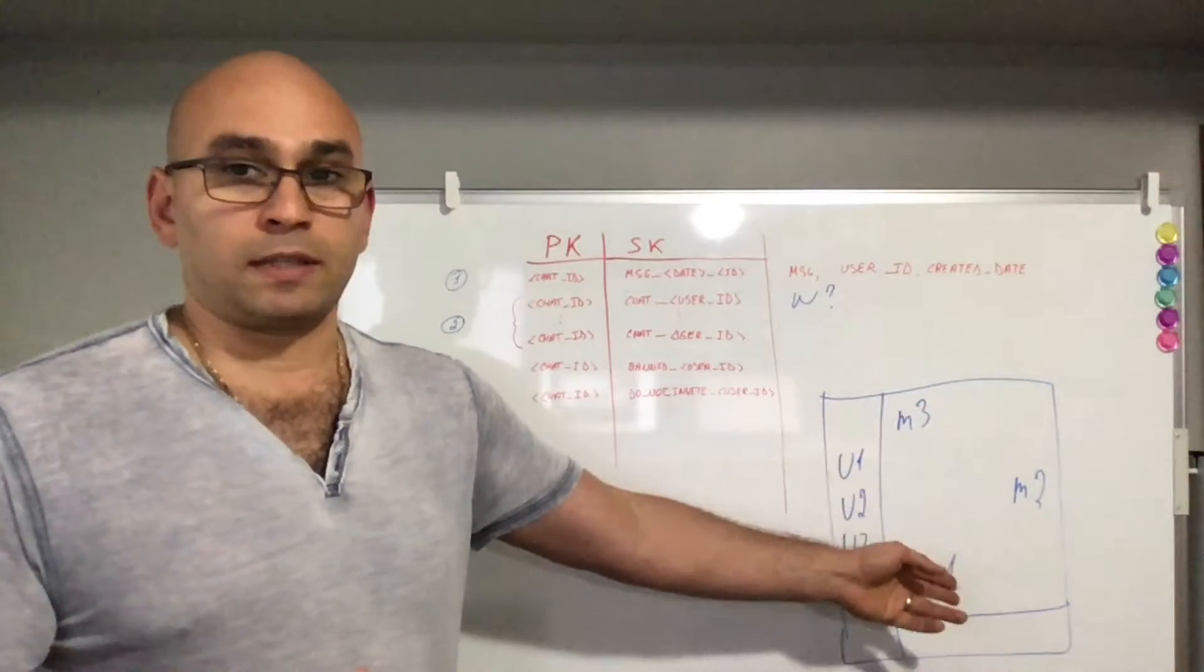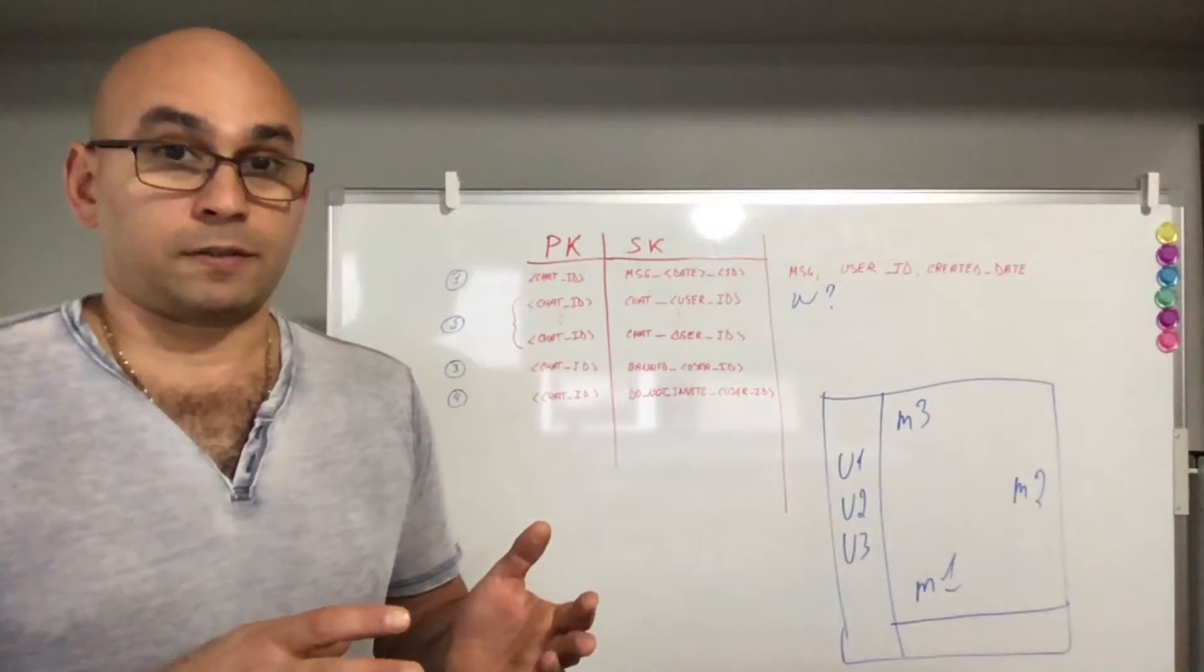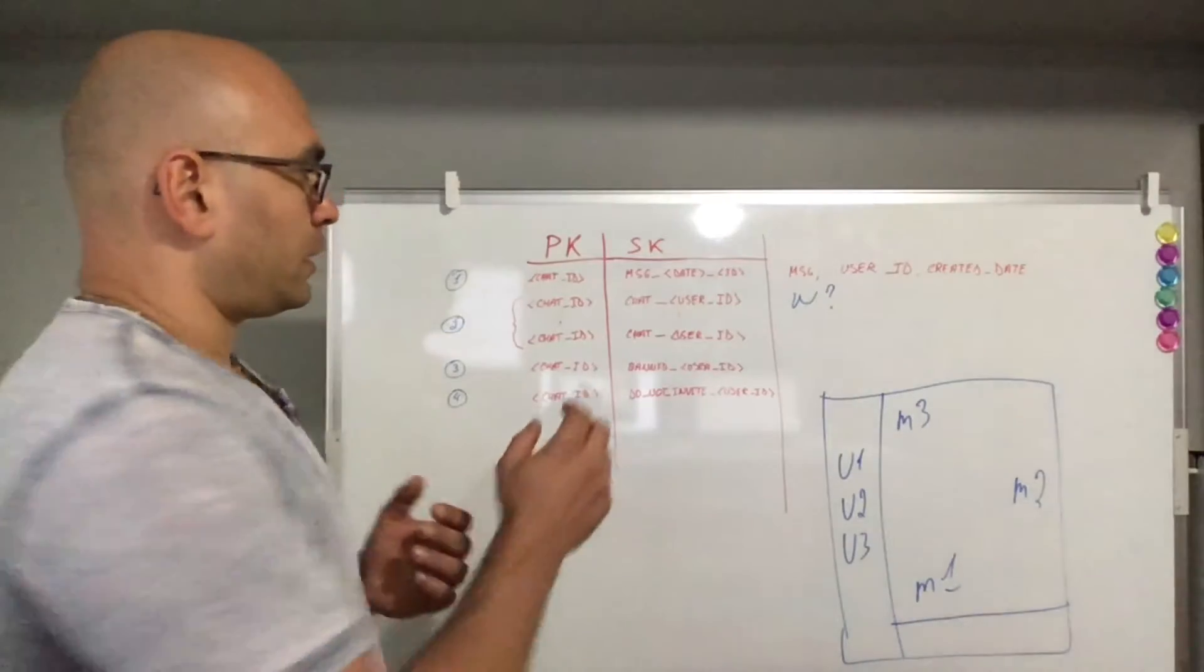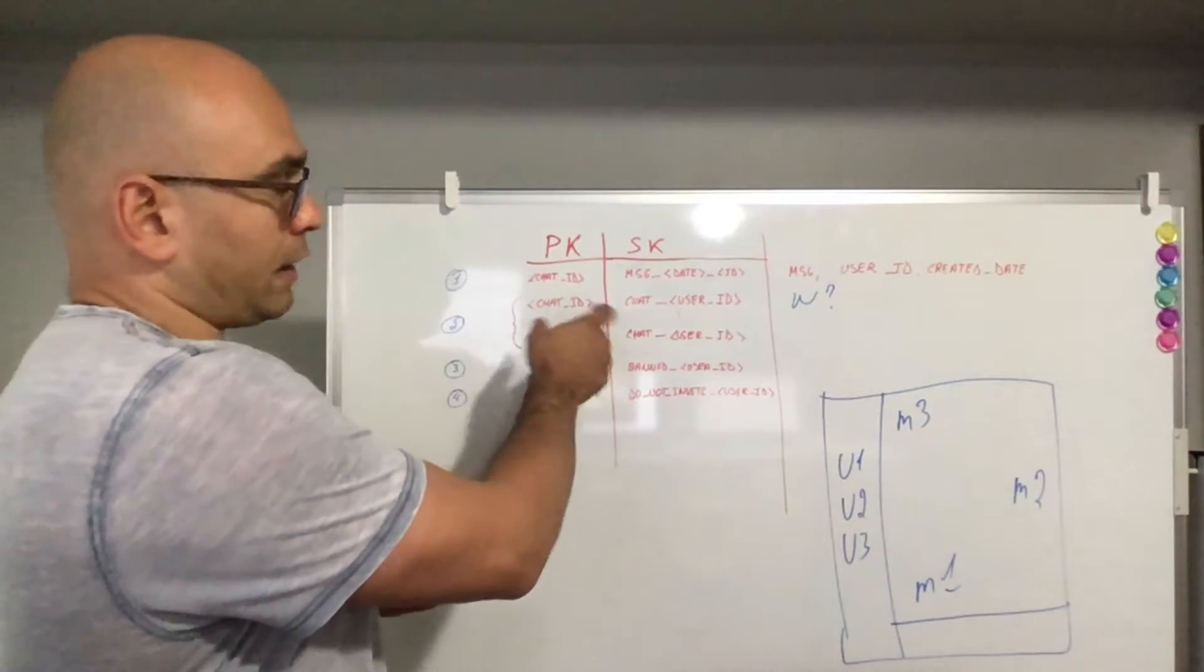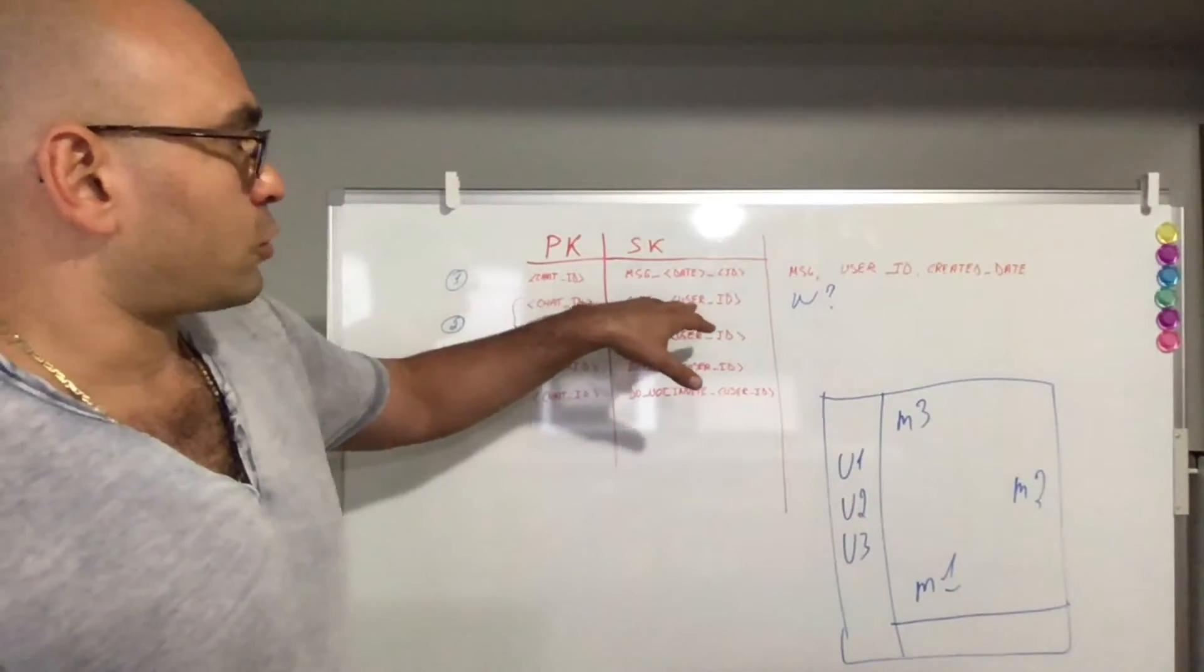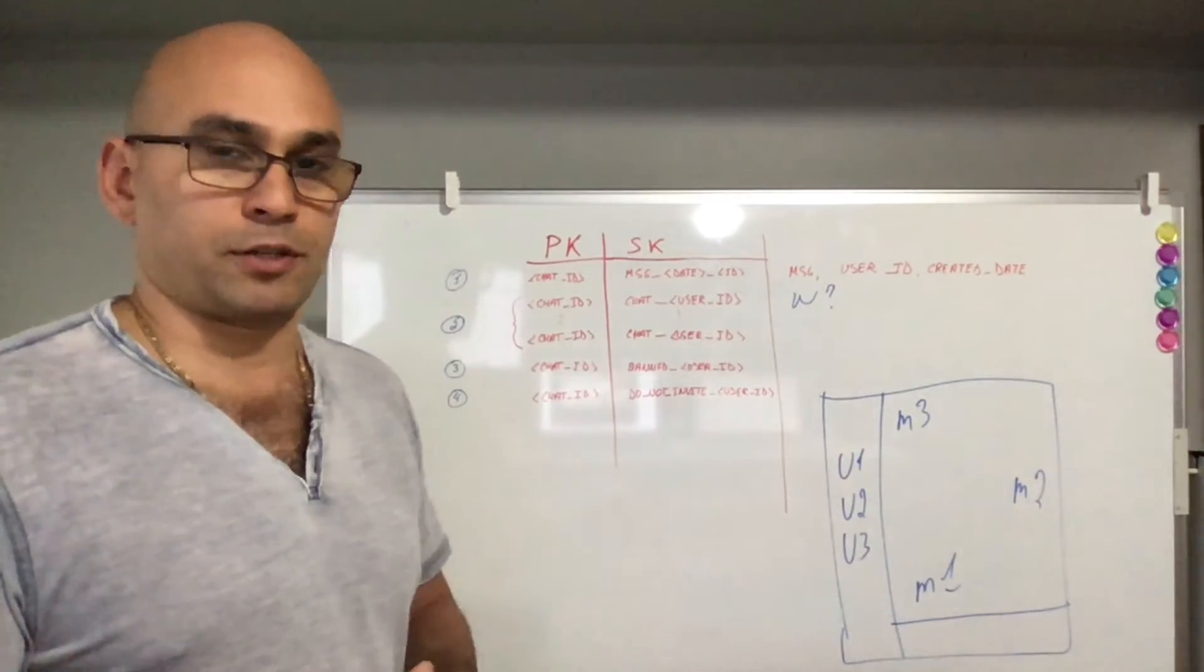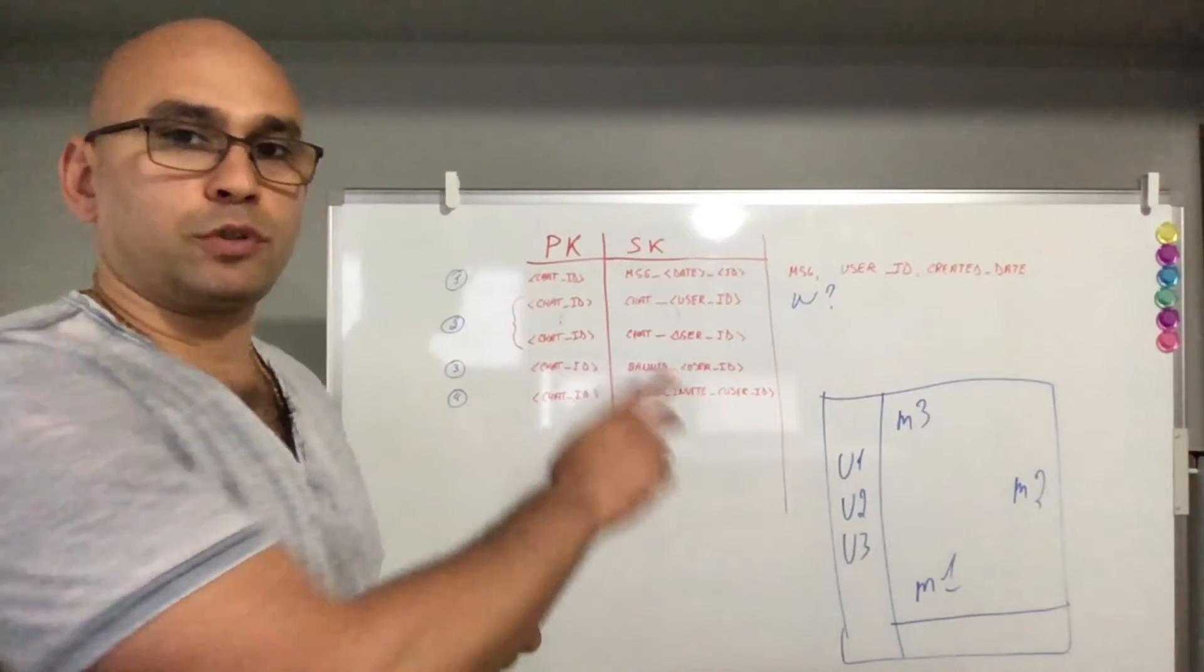Now let's talk about the actual conversation list. For me to look at the conversations that I'm a part of, what needs to happen is I need to create an inverse index. So I have this index here, or I have this data model data item here, which is the chat ID, chat underscore user ID. This would give me all the participants in a particular chat. But for me to know which chats I'm a part of, I need to create an inverse index of this.